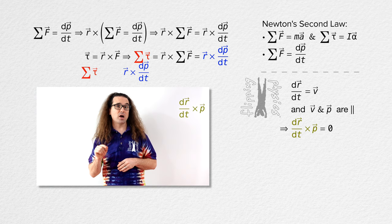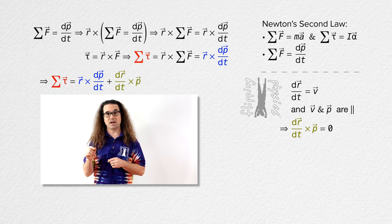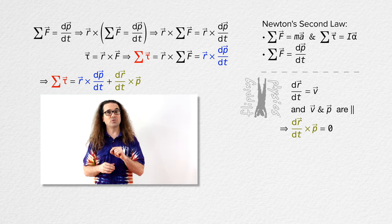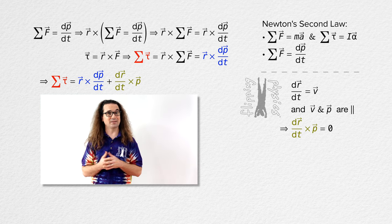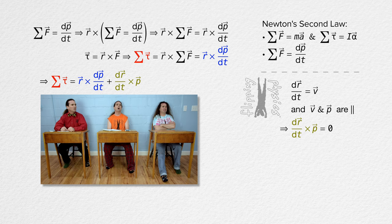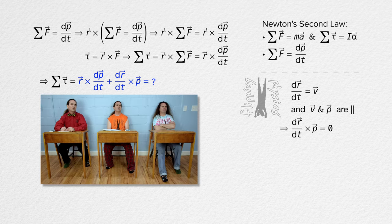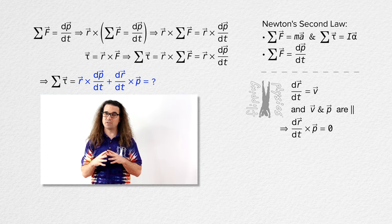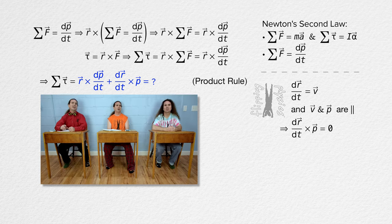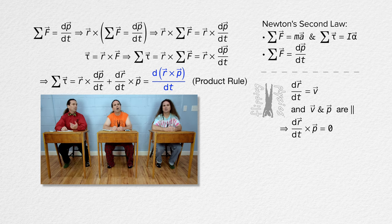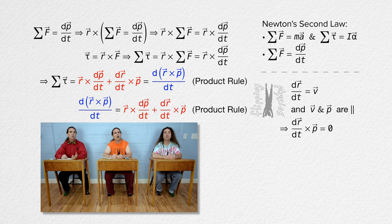Correct. That means we can add the cross product of the derivative of the position vector with respect to time and the linear momentum of the ball to the right-hand side of our net torque equation — we can add it because it equals zero. But why would we do that? The right-hand side now equals the derivative with respect to time of the cross product of the r position vector and linear momentum, by the product rule in reverse. That makes sense — I see it now, thanks.